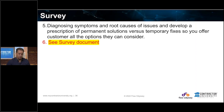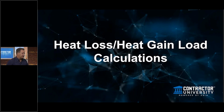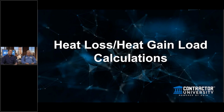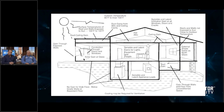So let's talk about heat loss and heat gain load calculations. We measured the house — all the rooms, windows, doors, insulation factors, number of people, appliances, the direction the house faces — and we're going to plug it into a form, calculation tool, piece of software, or app. Houses lose heat in the winter and gain heat in the summer. Insulation just slows it down. Windows slow it down. Doors slow it down.